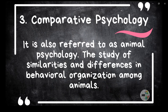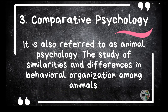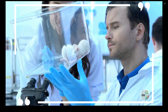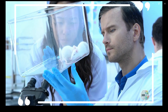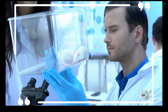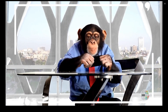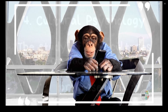Number 3: Comparative psychology, also referred to as animal psychology. It is a study of similarities and differences in behavioral organization among animals. For example, researchers could compare how rodents navigate mazes, how birds migrate over long distances, how bees communicate directions through dance, or compare how different species learn through trial and error, conditioning, and observation.